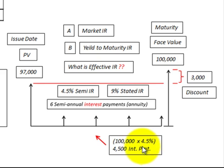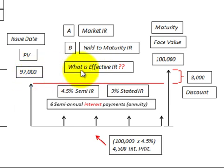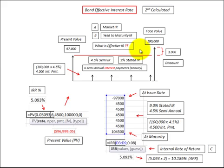The payments equate to $4,500 per period. We discount the $100,000 face value at maturity plus those six semi-annual interest payments back to the issue date to get the present value. In this case, discounting those cash flows back gave us $97,000, and the rate used to do that discounting is the effective interest rate — commonly called the market interest rate or yield to maturity.